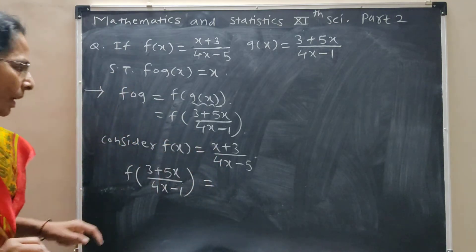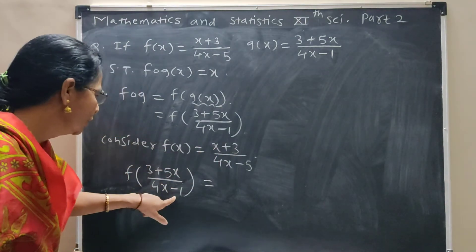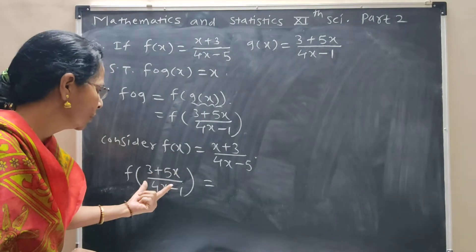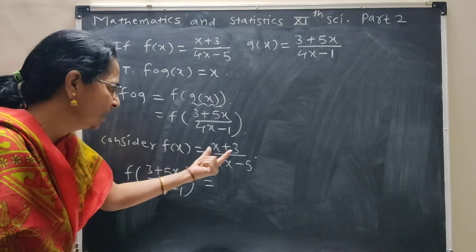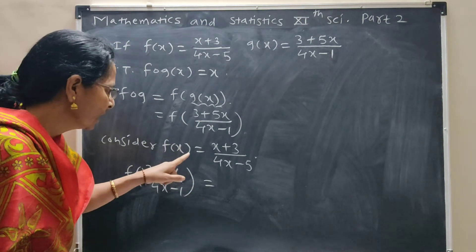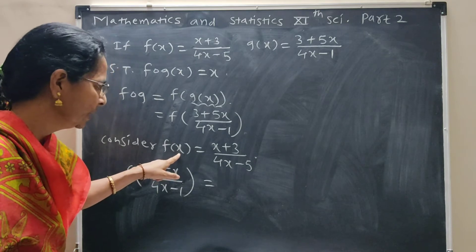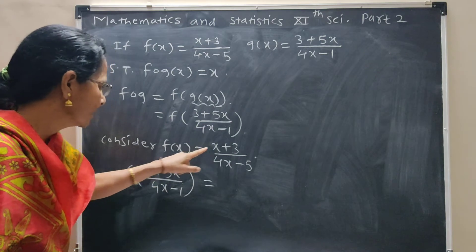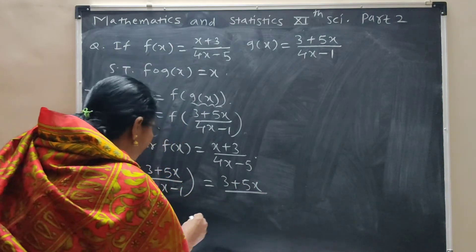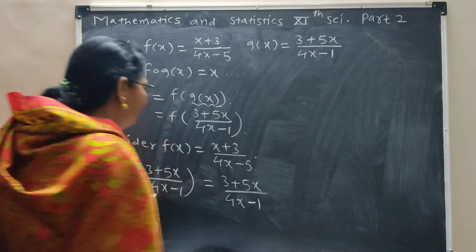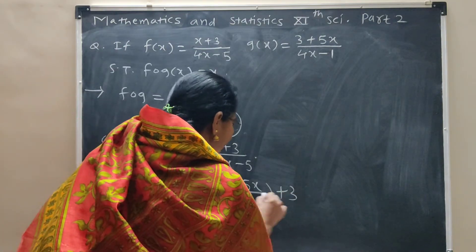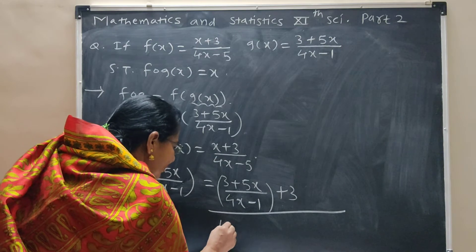fog of x is this value. We have to find f of this value. So where there is x in this statement, put the total value. f(x) is this value; we have to find f of this value. Therefore, where there is x in this statement, we write this total value: x replaced by (3 plus 5x) upon (4x minus 1).